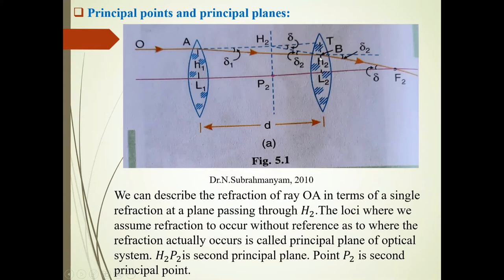There are a number of refractions while passing through this lens system. Finally, this ray meets at F2 point. This is the second focal point.